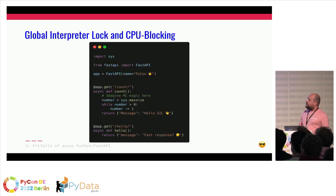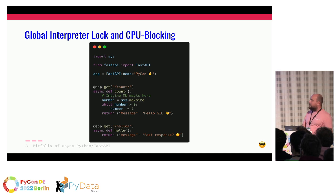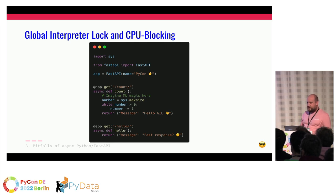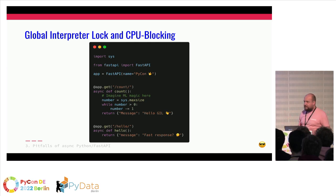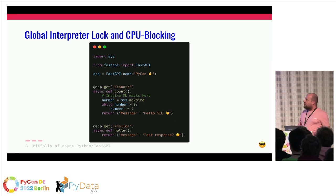A second thing is the global interpreter lock, or blocking CPU. I wrote a function which is a loop that lasts quite a while — this blocks your CPU. In Python, imagine some machine learning or heavy mathematical computations: they will claim the interpreter. It's a problem in Python that you cannot get around, whether you're async or not. When you call the function count, it will block until the while loop ends.